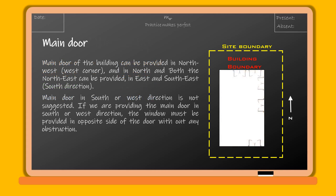The main door of the building can be provided in the northwest-west corner, and in the north and northeast corners. It can also be provided in the east and southeast corners. Providing the main door in the south or west direction is not suggested.